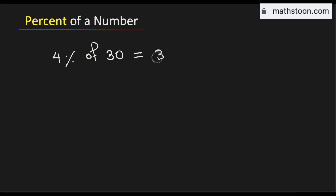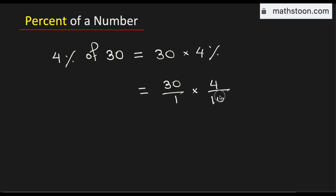Let us multiply the number 30 and 4% in order to compute 4% of 30. This is the same as 30 over 1 multiplied by 4 over 100. Now cancel the common zero.